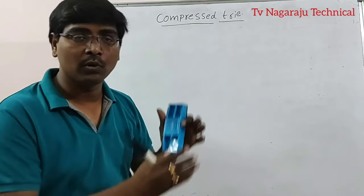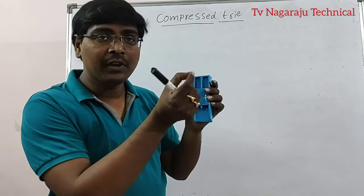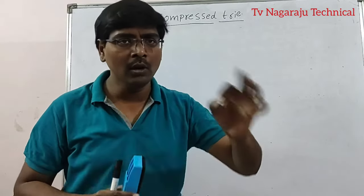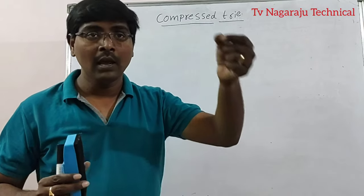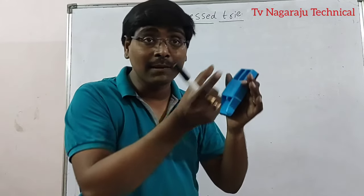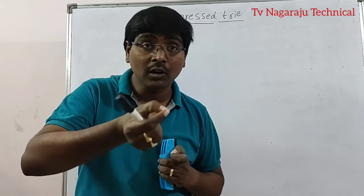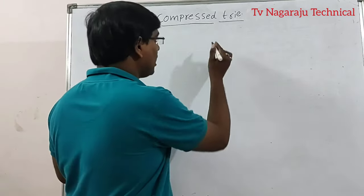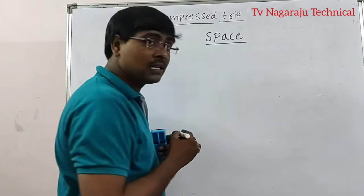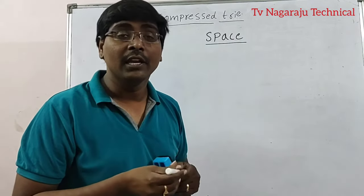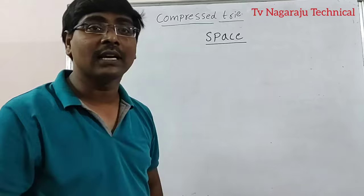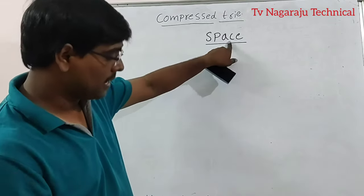How? Very simple. In the standard trie, if any node has only one path from the parent, combine that node with its parent. That means we are doing compression of the nodes. What is the advantage of compression? Space optimization — instead of using multiple nodes on a single path, we use a single node which consists of more than one character.